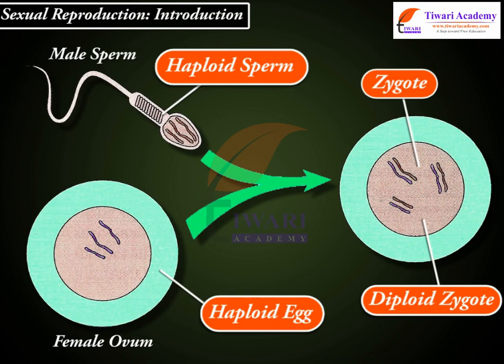Fertilization is also called conception. In humans, biologists call a fertilized egg a zygote. A zygote is the fertilized cell that will grow into a baby animal. The zygote then multiplies and grows into an embryo. A zygote is synthesized from the union of two gametes and constitutes the first stage in an organism's development.